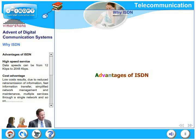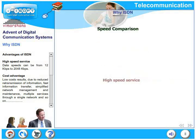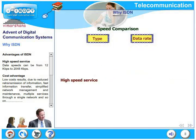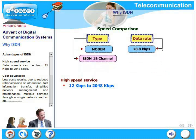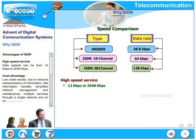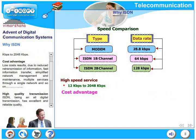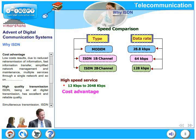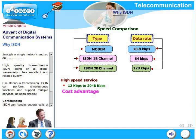Why do we need ISDN? Let's look at the advantages of ISDN. First, it is a high speed service. The data speed can range from 12 kilobits per second up to 2048 kilobits per second. ISDN also brings a cost advantage. Low cost results from reduced retransmission of information, fast information transfer, simplified network management and maintenance, and multiple services through a single network.